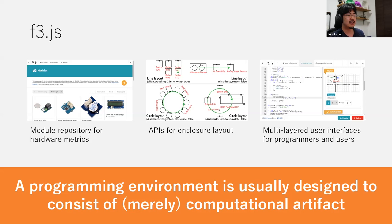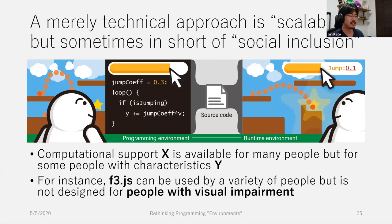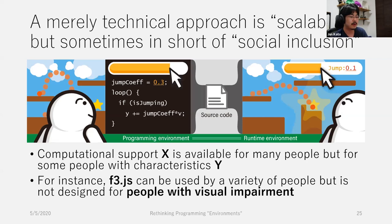Designing the environment to consist of computational artifacts seems pretty straightforward as a computer scientist. The benefit of such a purely technical approach is that it's really scalable. Various information technology-related innovations have benefited from scalability enabled by the computational backend. In the case of F3.js, it's a web-based service, so it can be served via the internet, and dynamically generated building instructions allow users to learn basic concepts of physical computing and programming by themselves. But I would like to note that the technical approach of computational support sometimes falls short of social inclusion, making it difficult to be used by people with particular characteristics. For instance, F3.js is not designed for people with visual impairment, and they would face difficulties when building the devices.